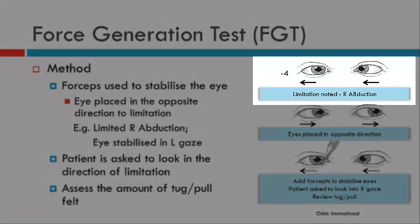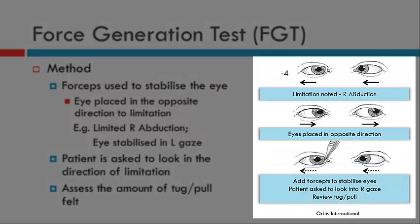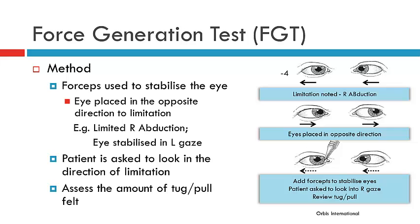Here we have an example of a patient with a right abduction deficit. We are going to ask the patient to make a movement. What we do is place the eye in the opposite direction to the limitation — so in this example, we would ask the patient to look into left gaze, as the limitation is in right gaze. The forceps are used to stabilize the eye in this position, and then the patient is asked to look into the direction where the limitation exists — in this example, into right gaze. The clinician will feel the amount of tug or pull of the eye as the patient attempts to move the right eye into abduction.